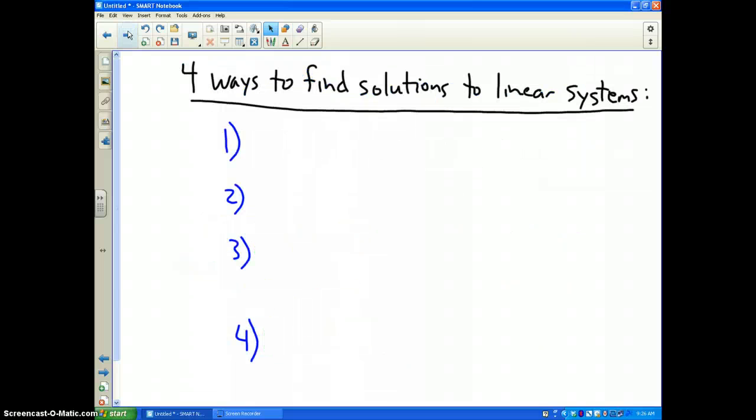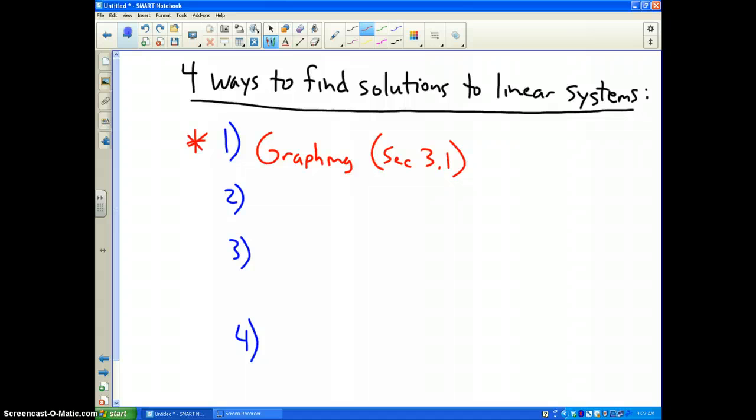Finally, what we are going to study in unit 3 and 4 combined is 4 ways to find solutions to linear systems. The first way is by graphing, and this is in section 3.1. This will be on the next video.